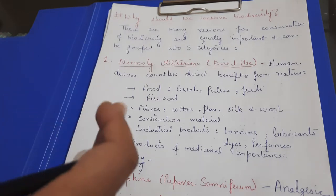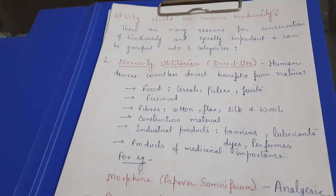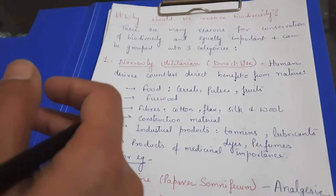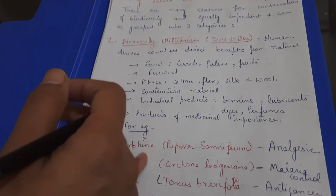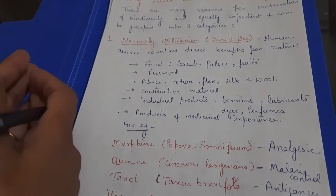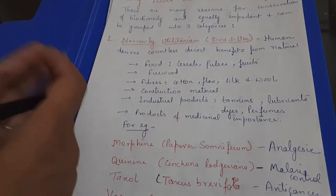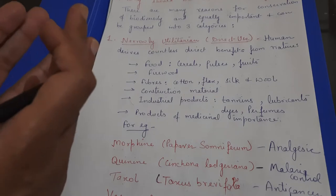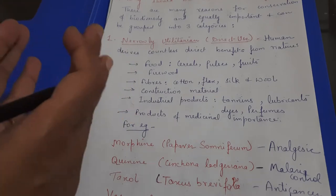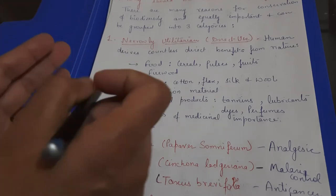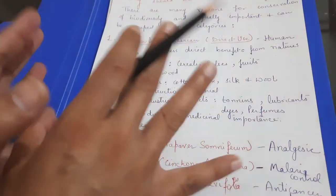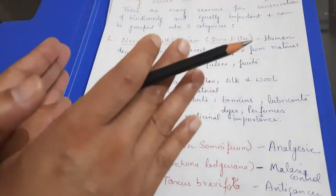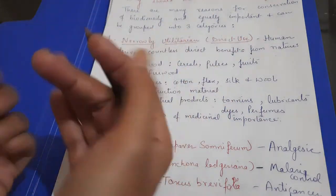So there are three main categories, these reasons are divided, they all are equally important. Why should we conserve biodiversity? First is narrowly utilitarian, direct use. Second is broadly utilitarian and third is ethical. These are the list of reasons, category of reasons, that why should we save biodiversity.